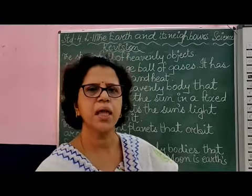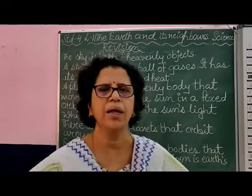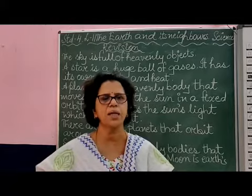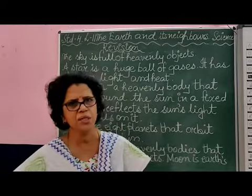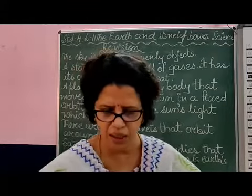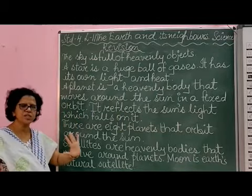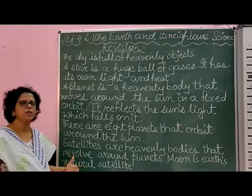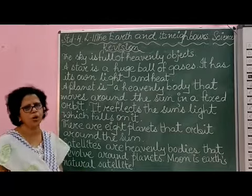The Earth has its own satellite. Satellites are natural bodies which move around a planet. Different planets have their own satellites. The Moon is our nearest celestial body and is our natural satellite. Satellites also do not have their own light. So we have the sun in the center, fixed in its place, with all the planets moving around the sun, and satellites moving around the planets.